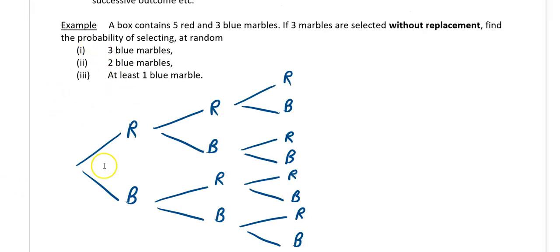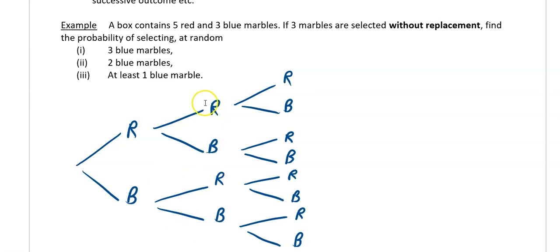We've got our tree diagram drawn and we still have to fill in probabilities. This first pair of branches is my first pick — I could grab either a red or a blue. Then this is my second pick, so along this branch I could get red then red, red then blue, blue then red, or blue then blue.